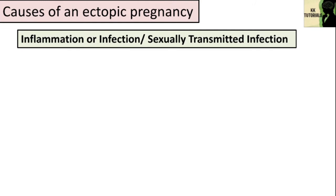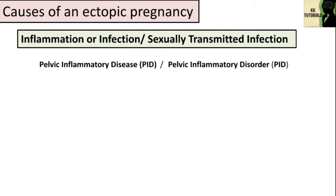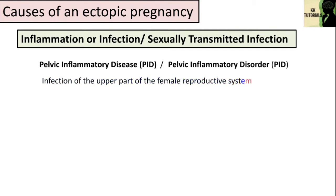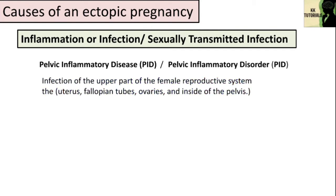Now let's talk about causes of ectopic pregnancy. The cause isn't always clear, but there are a number of risk factors. Inflammation or infection are among them. Women with pelvic inflammatory disease (PID) have a high occurrence of ectopic pregnancy. PID is an infection of the upper part of the female reproductive system — namely the uterus, fallopian tubes, and ovaries, and inside the pelvis.